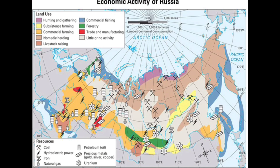Moving on to natural resources. First, minerals and energy. The petroleum deposits, marked by a barrel symbol, can be seen over most of Russia. Petroleum is one of the most important natural resources found in Russia. Sixteen percent of the world's coal can be found here, marked by a pickaxe symbol throughout various regions. There is more dry natural gas in Russia than in any other country in the world, marked by a flame symbol.